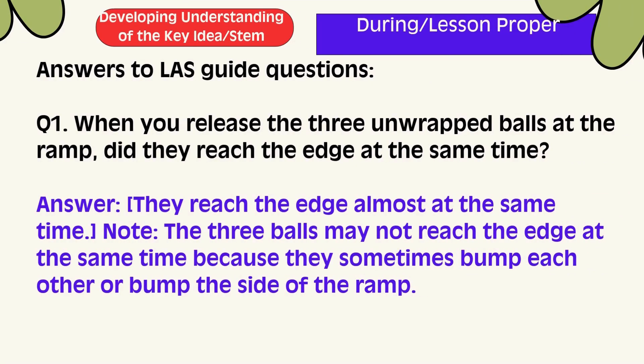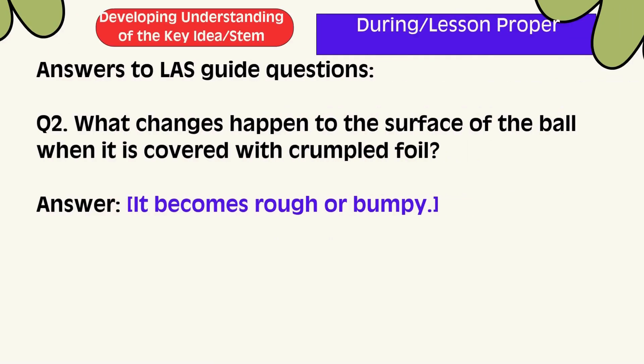Let's answer the questions. Question 1: When you release the 3 unwrapped balls at the ramp, did they reach the edge at the same time? The answer is they reached the edge almost at the same time. Note: the 3 balls may not reach the edge at exactly the same time because they sometimes bump each other or bump the side of the ramp. Question 2: What changes happen to the surface of the ball when covered with crumpled foil? It becomes rough or bumpy.